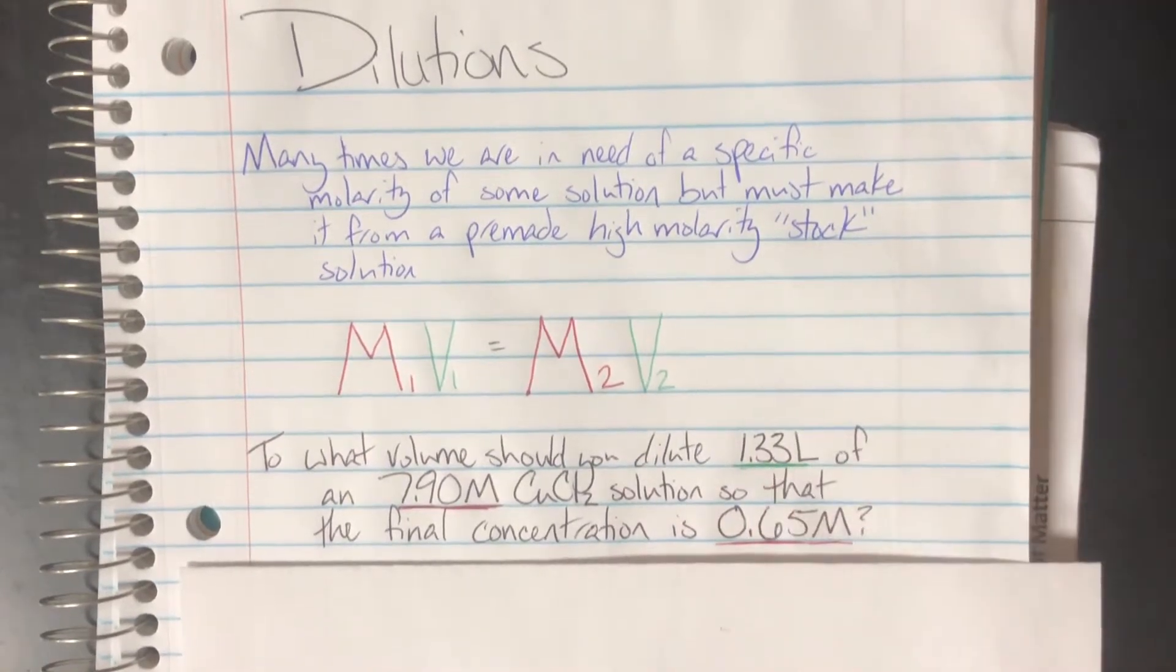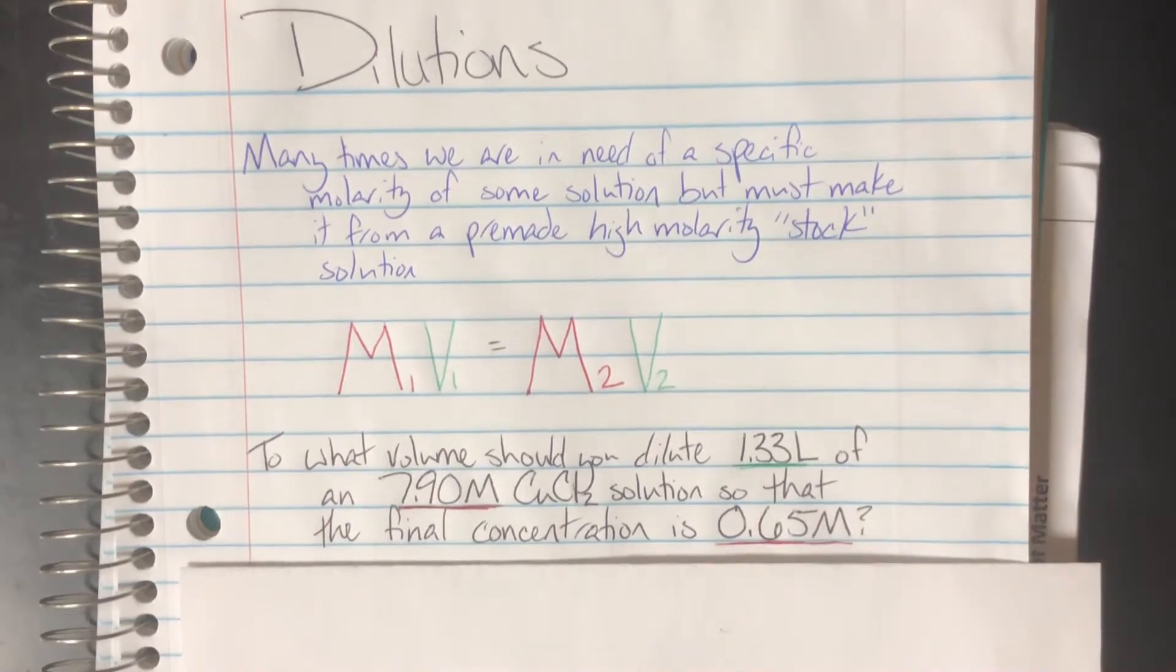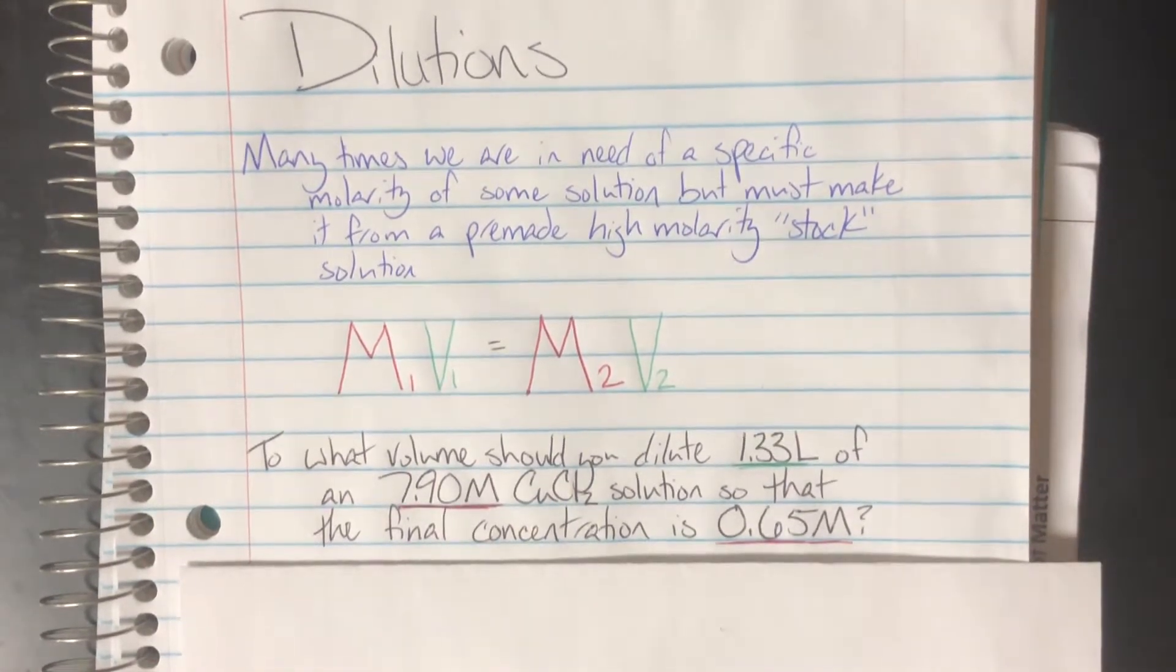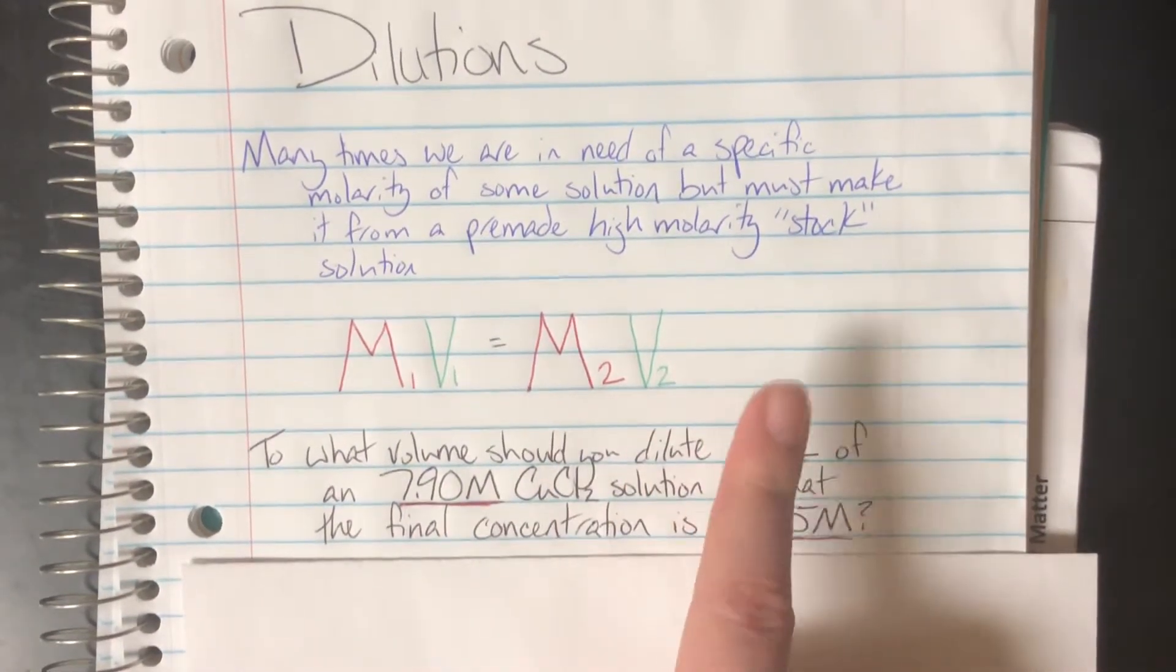1.33 liters, well, if I already have V2, that must mean that 1.33 is my V1 of a 7.9 molar copper 2 chloride solution. So this is going to be the molarity that is attached to this volume, which means that this molarity is my M1.